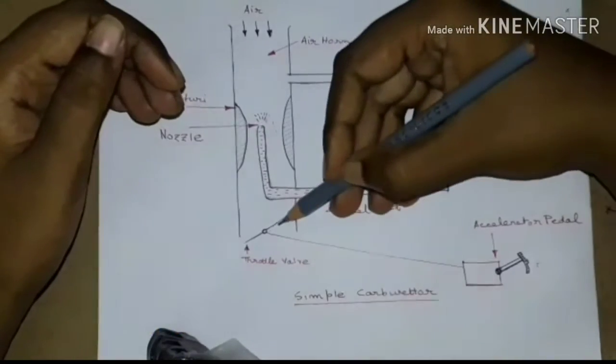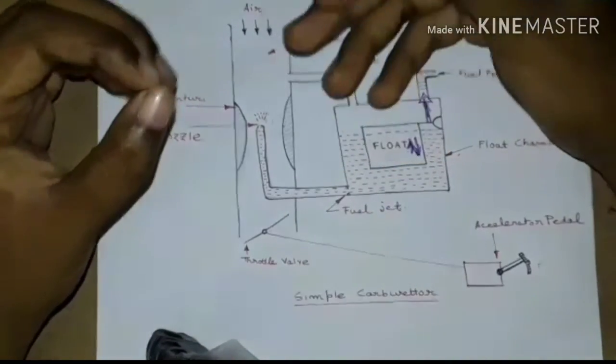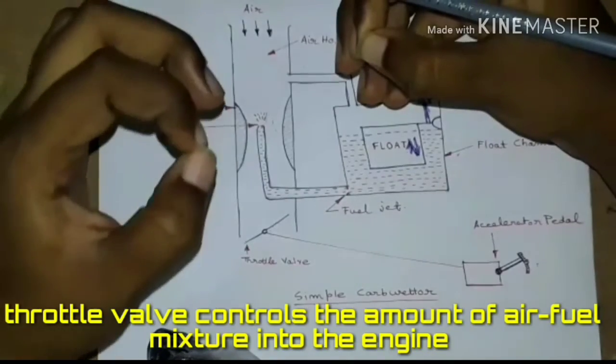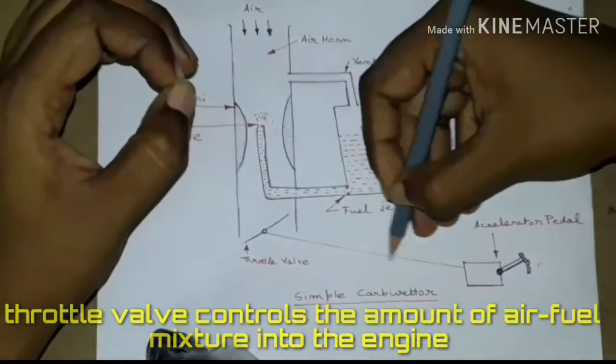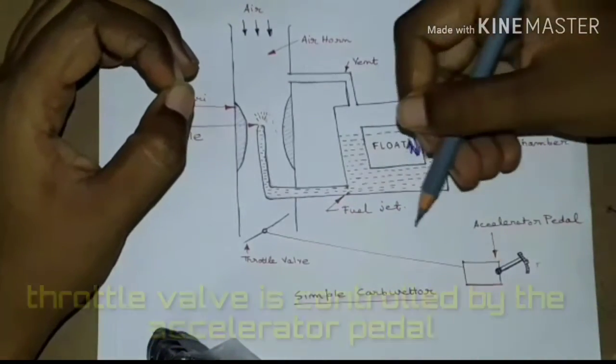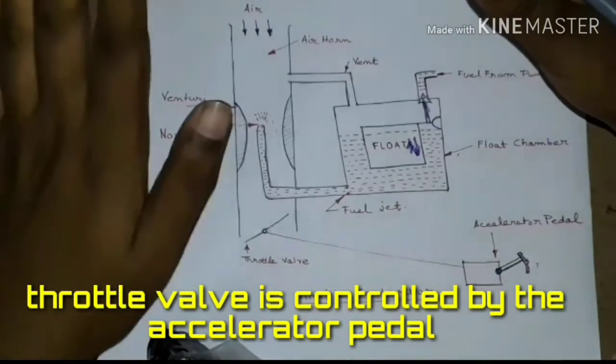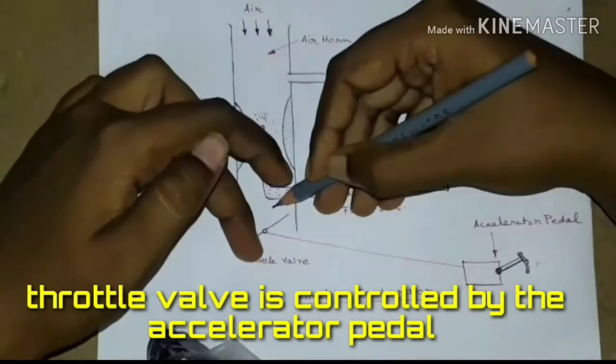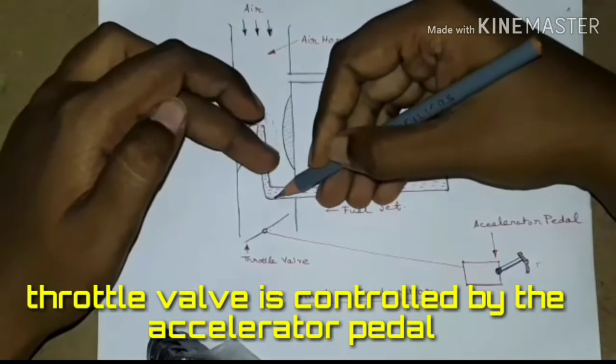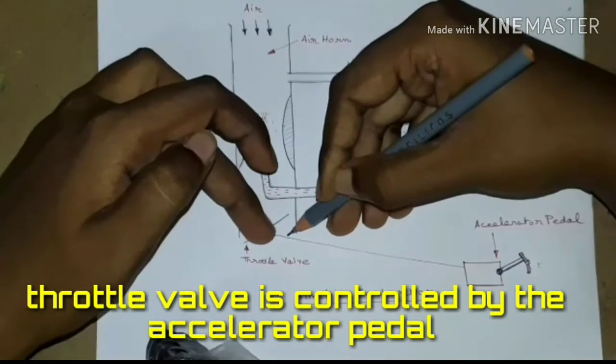Now the purpose of throttle valve here is to control the quantity of air fuel mixture. It is attached to the accelerator pedal. As the pedal is pressed, the valve opens and allows air fuel mixture to go inside the engine.